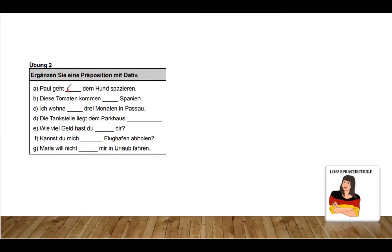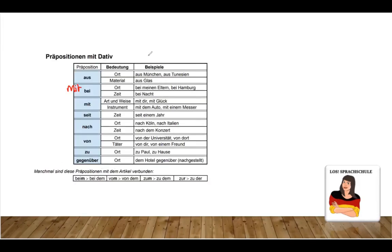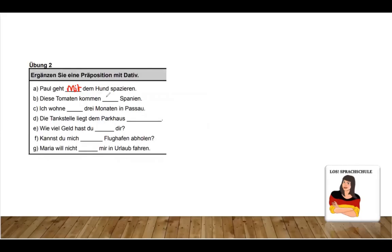Paul geht mit dem Hund spazieren. With the dog. We have it here. How? In what way? With you, with him, with the dog. Diese Tomaten kommen aus Spanien. Those tomatoes come from Spain. Ich wohne seit drei Monaten in Passau. I live in Passau for three months. Die Tankstelle liegt dem Parkhaus gegenüber. The gas station is on the opposite side of the parking lot.